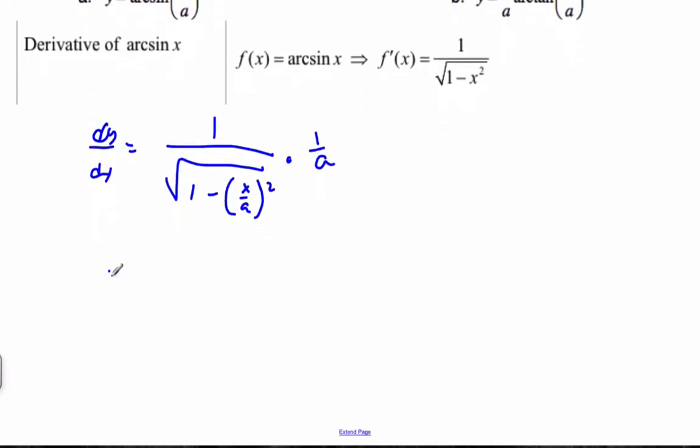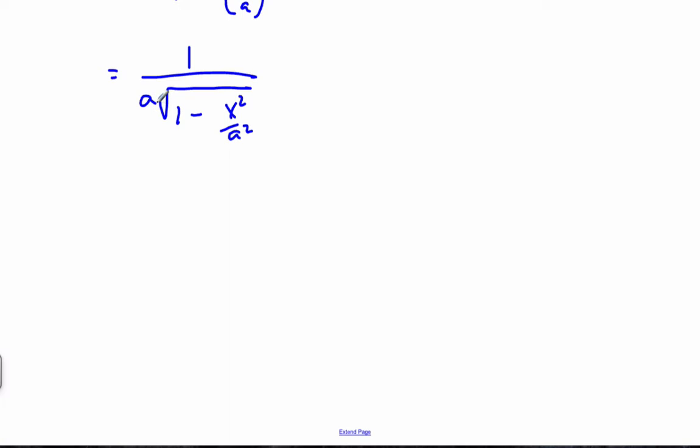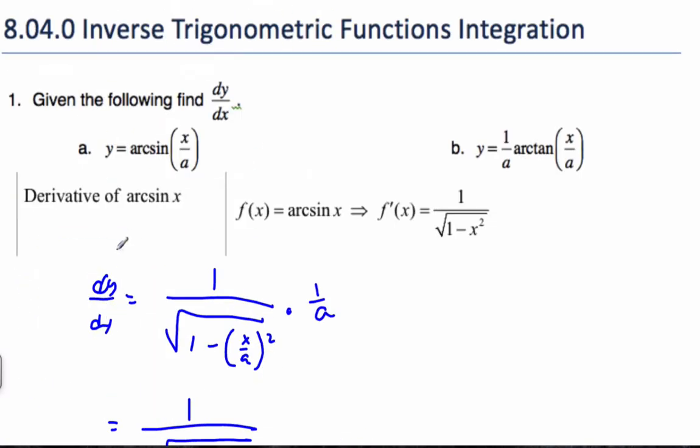Which then becomes 1 over a times the square root of 1 minus x squared over a squared. Now, if I tidy this up, if I distribute, if I put a inside, I can get rid of this fraction here. And so it ends up being a squared inside, a squared times 1 minus a squared times x squared over a squared becomes x squared. And so dy/dx is simply this scenario here. There's my derivative of arcsin.